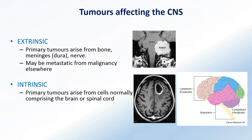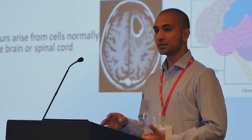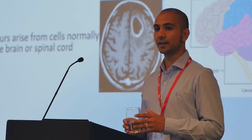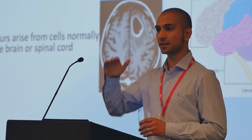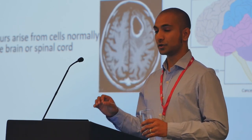The tumors that affect the brain and central nervous system can be divided into two categories. One is called extrinsic, and these are tumors that arise effectively outside the brain - they're not directly tumors occurring from inside the brain. These can arise from the bone, from the meninges, or from nerve tissue. The meninges is three connective layers that envelop the brain and spinal cord, and the most proximal to the skull of these layers is called the dura.